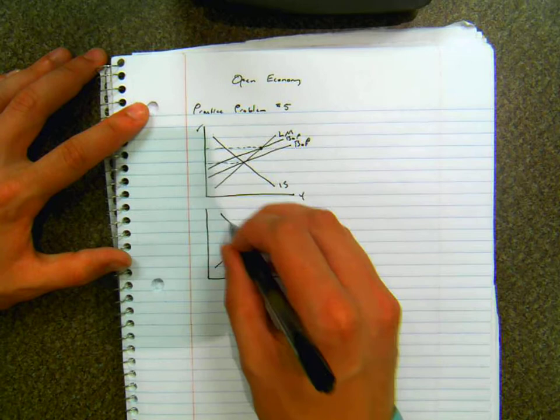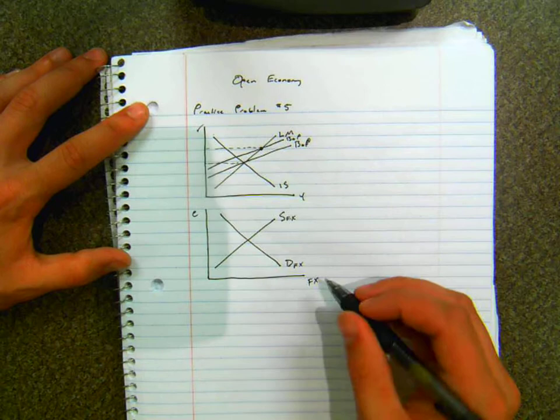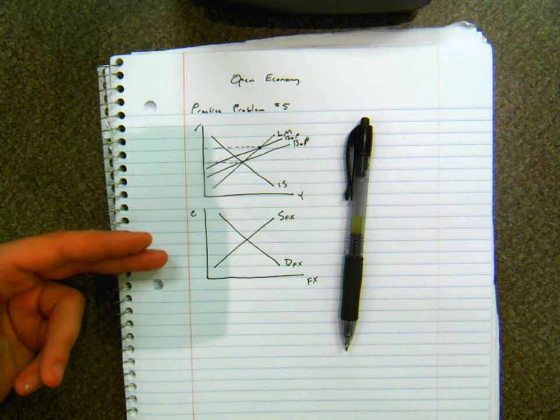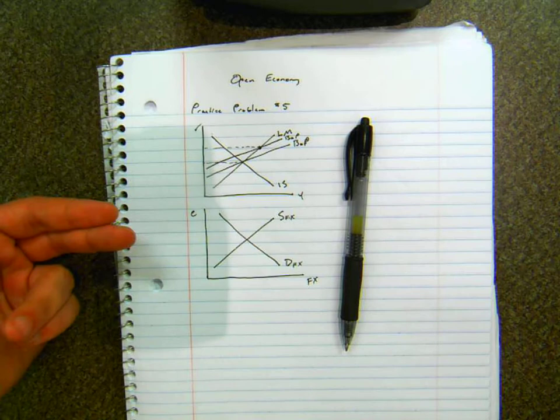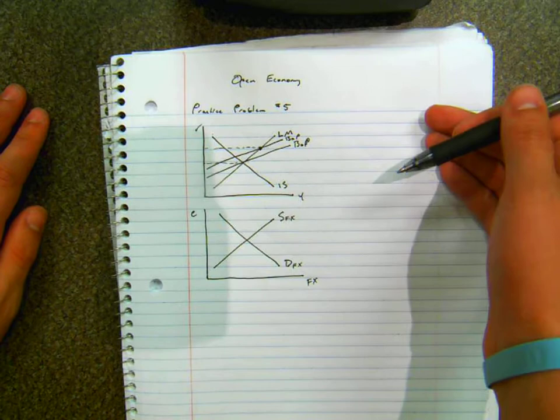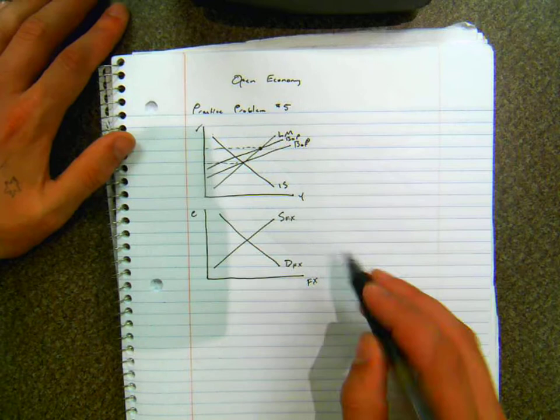Okay so what happens is that the balance of payments for your domestic economy lowers because more people want to invest their money in the foreign economy. Because since there's now a higher interest rate in the foreign economy people can make more money by investing in there. Like if I'm out there to loan money I can now earn a higher interest rate on my loaned out money in the foreign economy. So I'm less likely to invest in the domestic one.